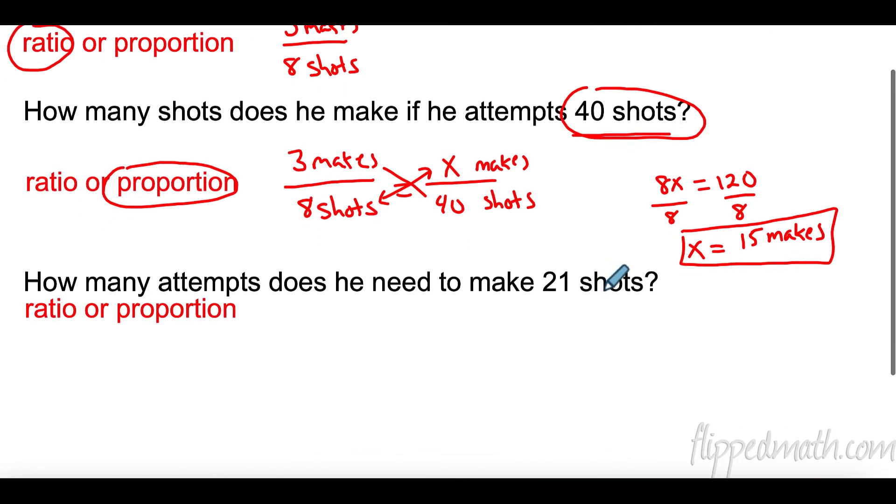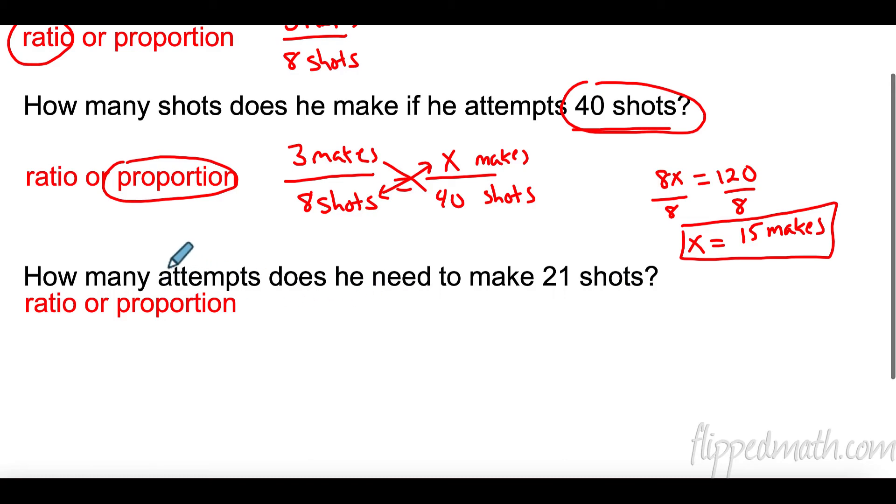Let's try this one down here. How many attempts? So, I don't know the number of shots. So, I can do it again. Three makes for eight attempts or eight shots. So, I have makes on top, shots on the bottom. Make 21. So, makes goes right here on top. And I don't know the number of shots.